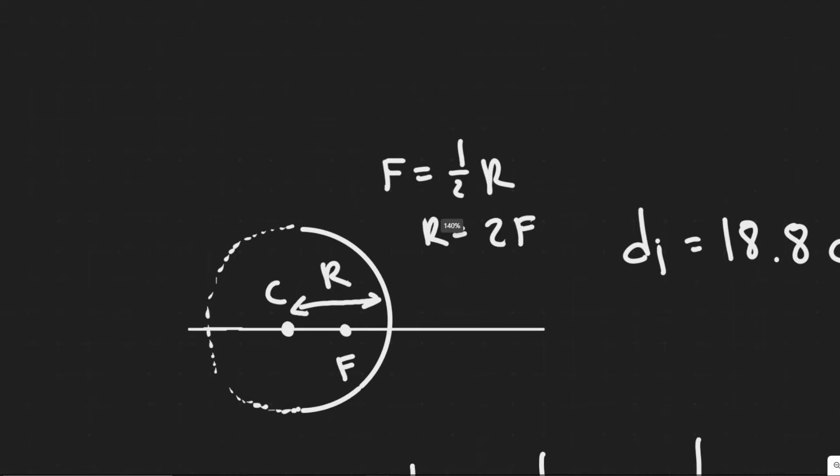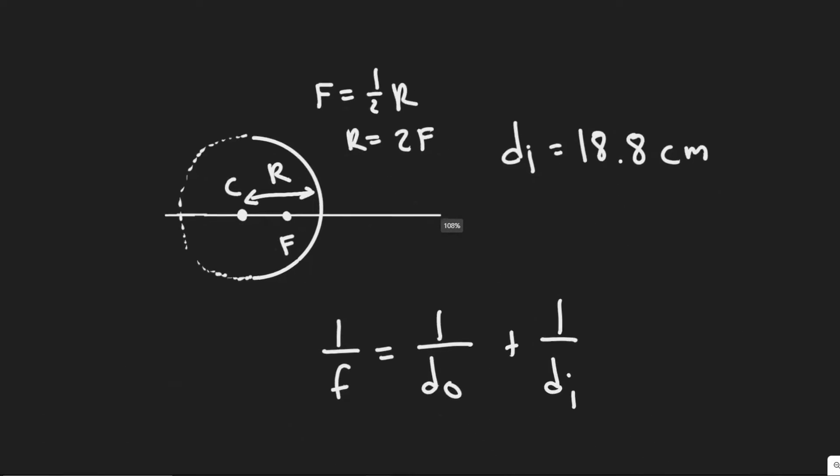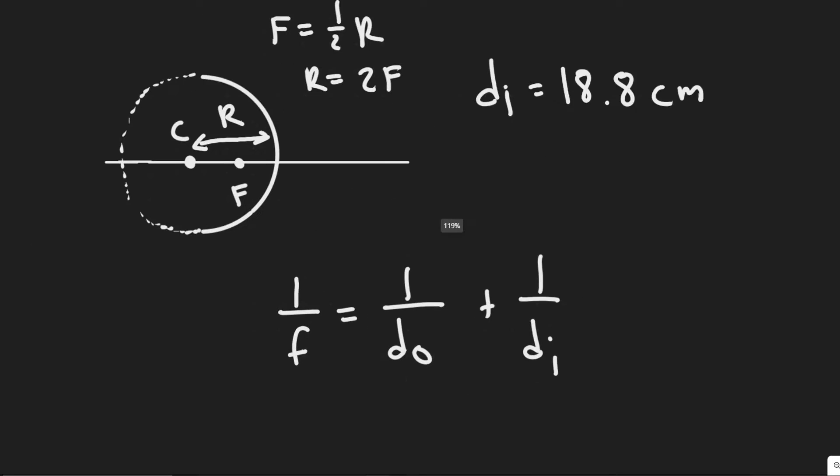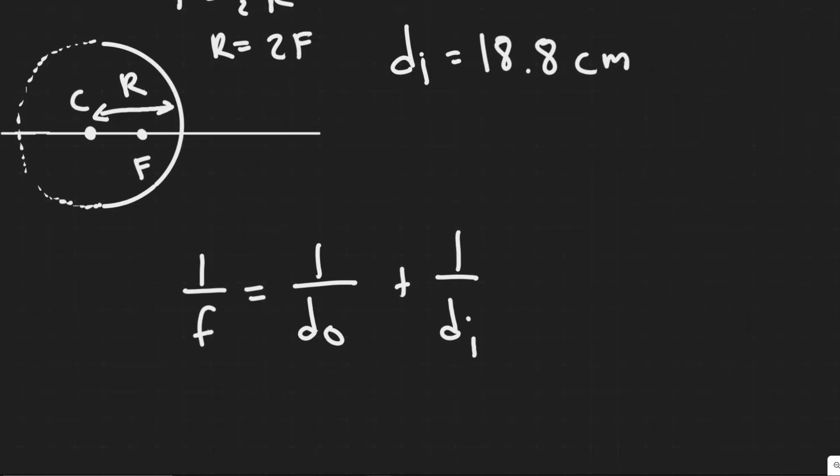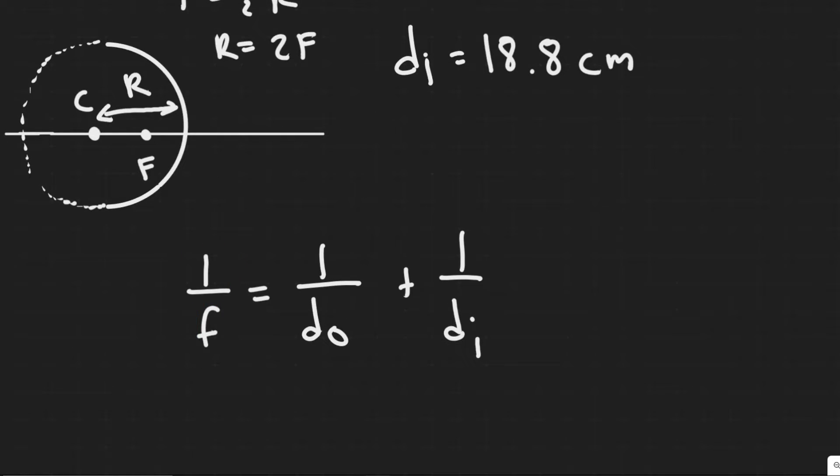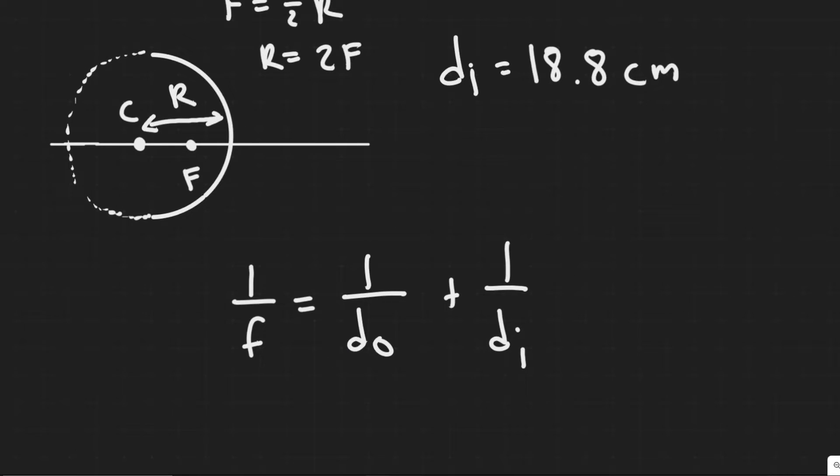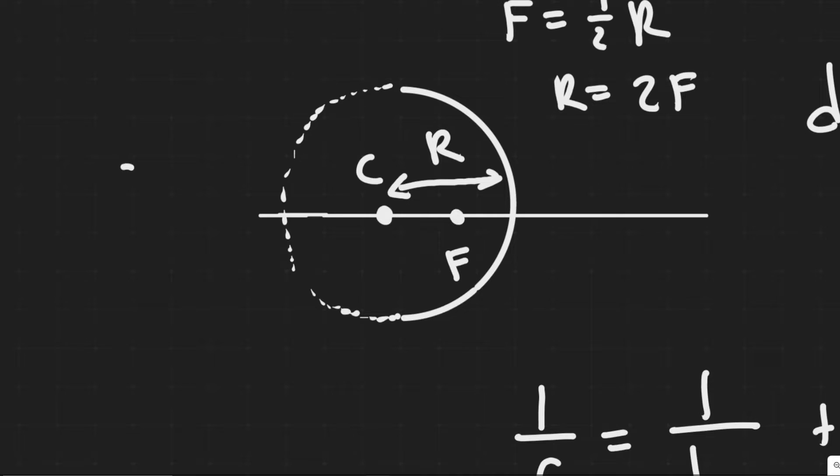So now what we need to find is F. The way we find F is by using this formula right here, and we call it the mirror equation. So the mirror equation is 1 over F is equal to 1 over D sub 0 plus 1 over D sub I. So F is your focal length. D sub 0 is the distance between the mirror and the object, in this case it's the sun.